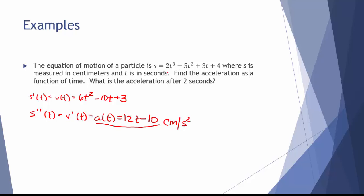That gives us acceleration as a function of time. Now we need the acceleration after 2 seconds, so we find a of 2: that's 12 times 2 minus 10, which is 24 minus 10, giving 14 centimeters per second squared.